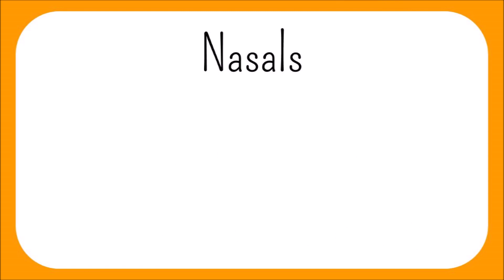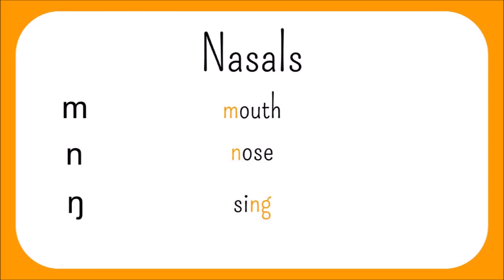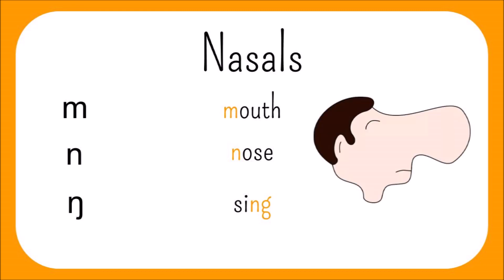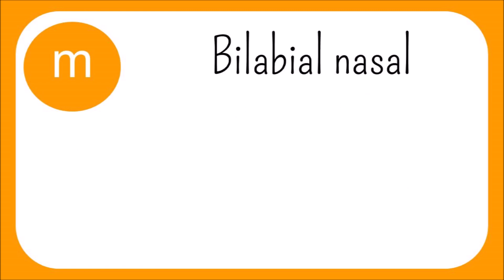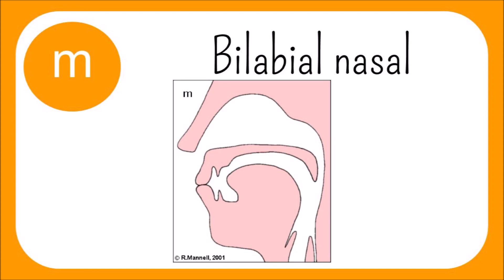The nasal consonants in English are /m/, /n/, and /ŋ/, as in mouth, nose, and sing. They are called nasals, as articulating the sounds requires airflow through the nose. M is the first sound we will talk about. It is called a bilabial nasal, as both lips are closed for its articulation as air escapes through the nose. It is also voiced. You can check if a sound is voiced or voiceless by placing your finger on the front of your throat as you recite the sound. If you feel a vibration, it is voiced. If not, it is voiceless.